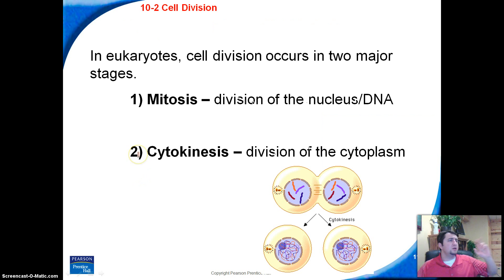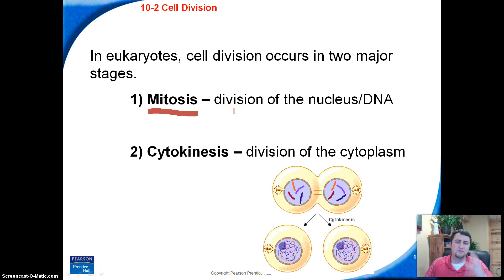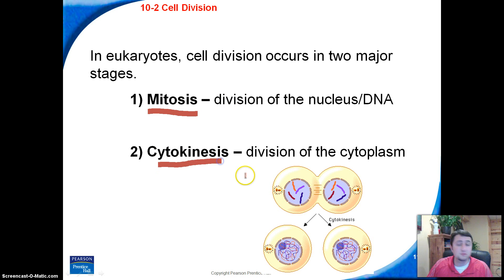Cell division, at least in eukaryotes, occurs in two major stages. We can have mitosis — that's actually where we're going to divide the nucleus, and inside the nucleus is the DNA. And then cytokinesis, which is where we're going to divide the cytoplasm.